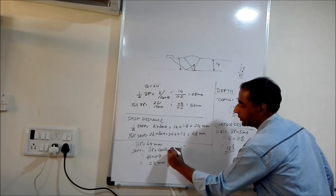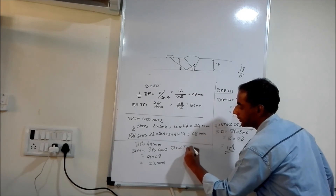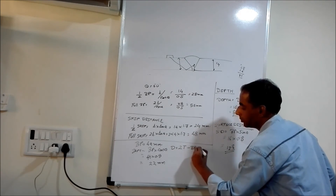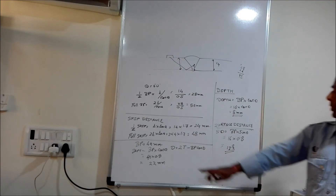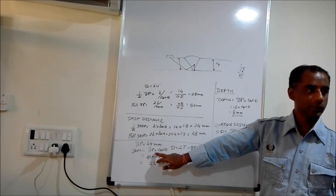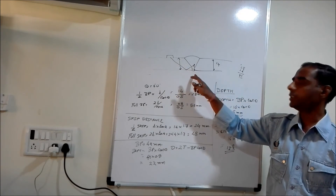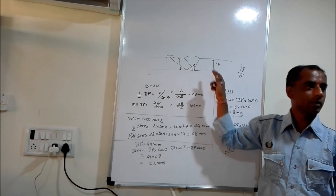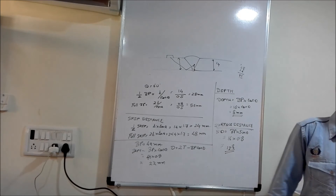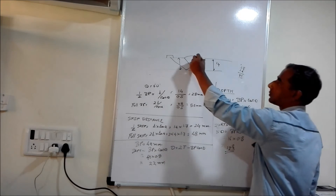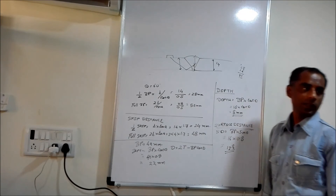Depth is equal to 2t minus bp into cos theta. I have done the bp cos theta. So you have to minus 2t from the calculated value. So you have the actual depth.